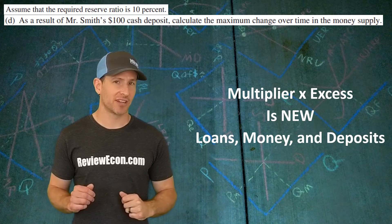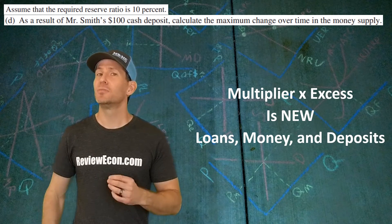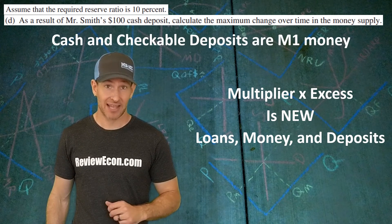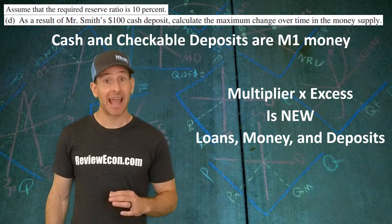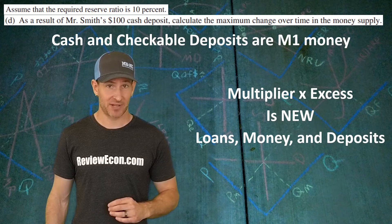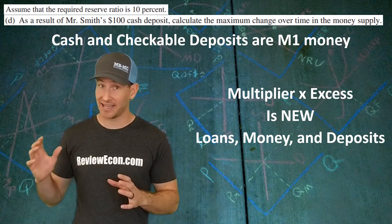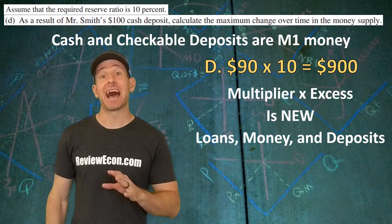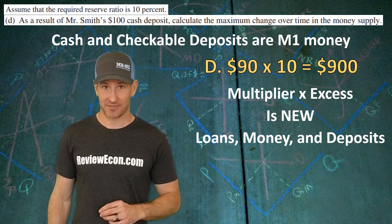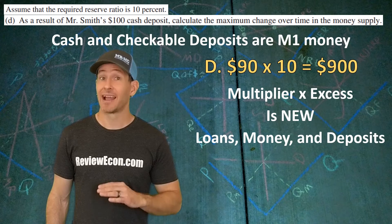Then we have to ask ourselves if that original amount of money that Mr. Smith deposited, was it new money? Well, it originally was cash, if you recall. Cash is part of the M1 money supply, and checkable deposits are also part of the M1 money supply. Since that is not new money, we don't add that original $100 back in, and we're just leaving it at $900 worth of total money that can be created as a result of his deposit. Multiply this out, show your work, and then you get your point.